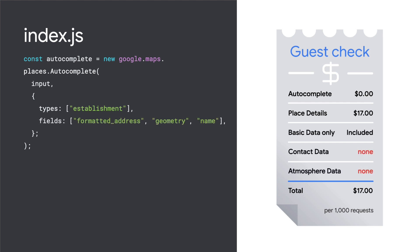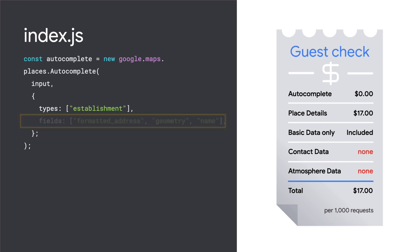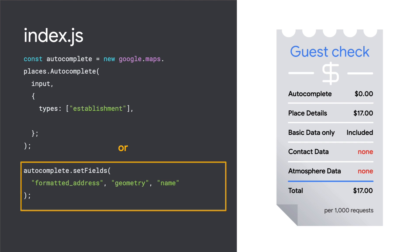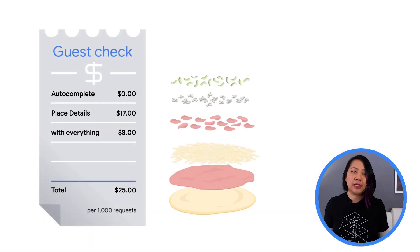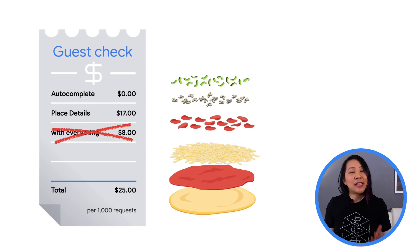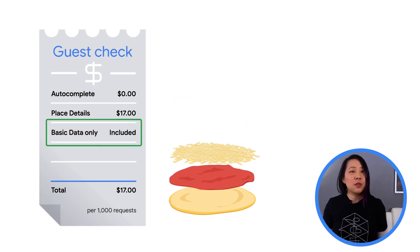When you set up your place autocomplete request or widget, the key is to add the fields parameter to specify exactly which details you want. This is like telling the server that you want a plain cheese pizza instead of a combo. You can do this either by setting the property when you initialize the autocomplete service or by calling the set fields method later on. If all you need is basic data, that's a 32% savings on your autocomplete bill just by adding one parameter to your code.